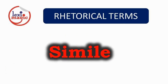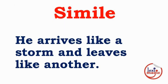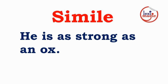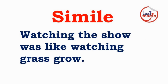A simile is similar to a metaphor, where two things are compared using 'like' or 'as.' Examples: 'He arrives like a storm and leaves like another.' 'They fought like cats and dogs.' 'He is as strong as an ox.' 'Watching the show was like watching grass grow.'